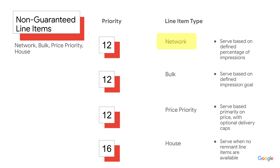First on the non-guaranteed priority list are network line items. Network line items serve based upon a defined percentage of impressions. This item should be used for your partner ad networks that don't have an impression goal.